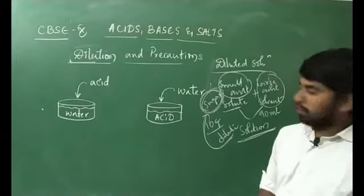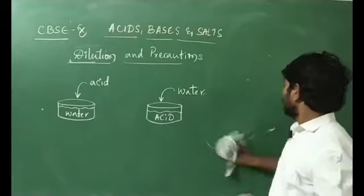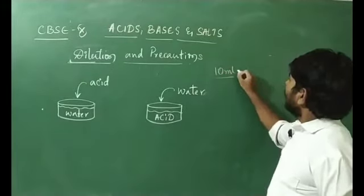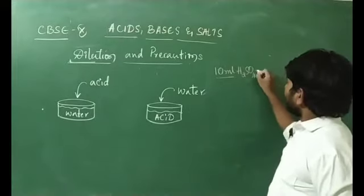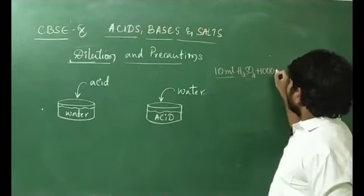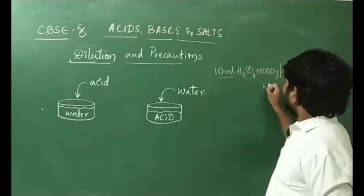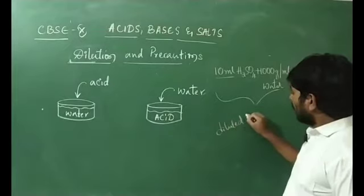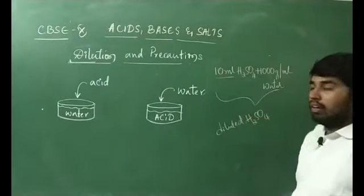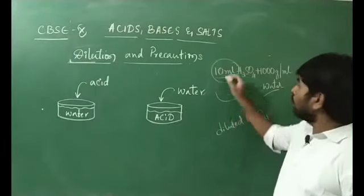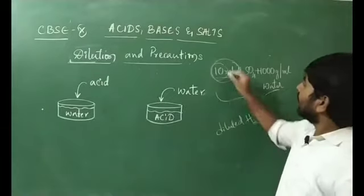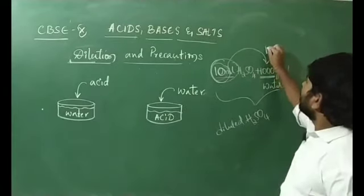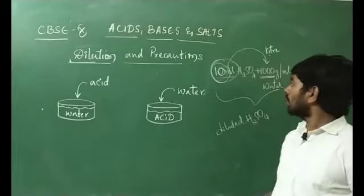Similarly, if we take a small amount of acid — say 10 ml of H₂SO₄ — and dissolve it in 1000 ml of water, this is said to be diluted H₂SO₄. We are taking only 10 ml of acid and dissolving it in 1 liter of water.